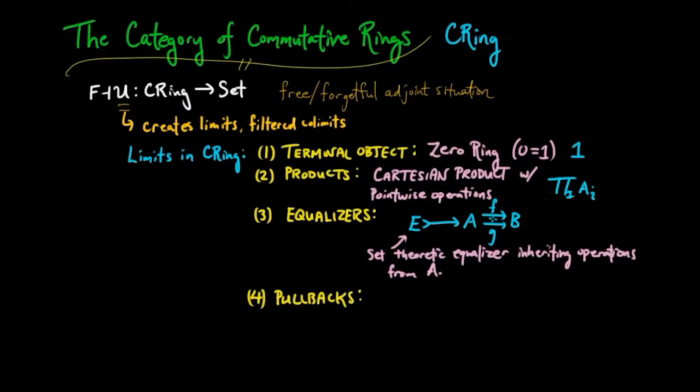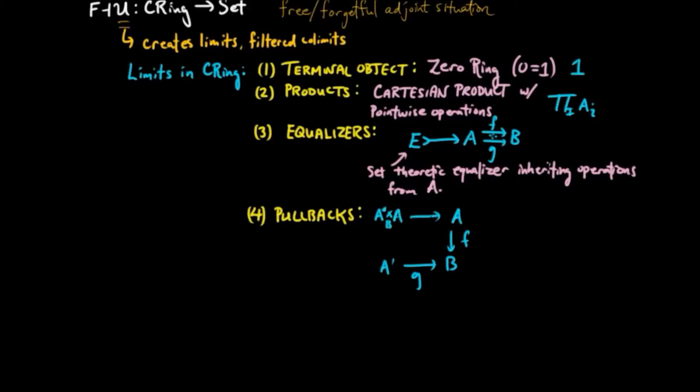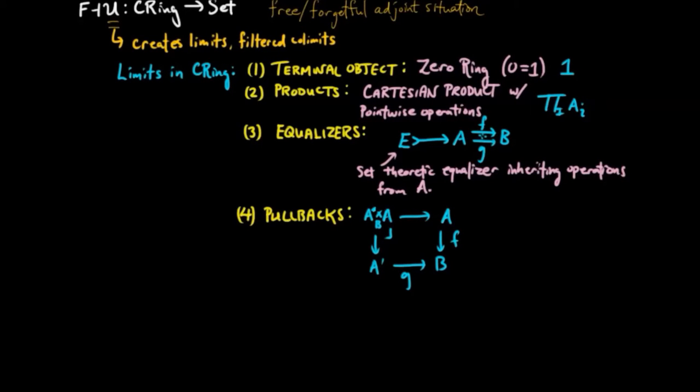For pullbacks, given two ring morphisms, F and G, we can take the pullback of the underlying sets, which will give us a subring of the product A and A'.